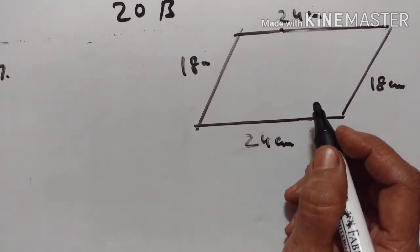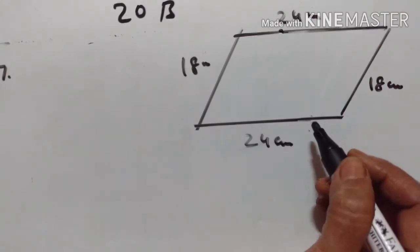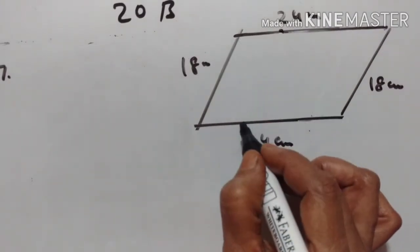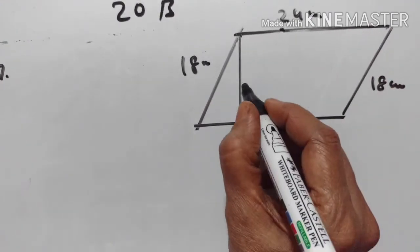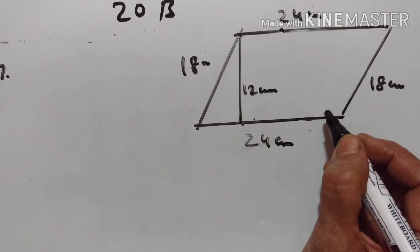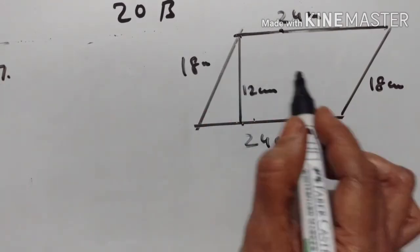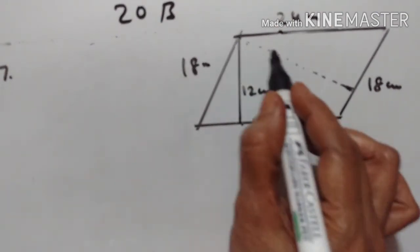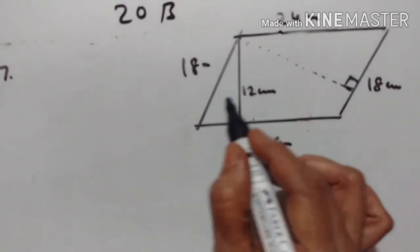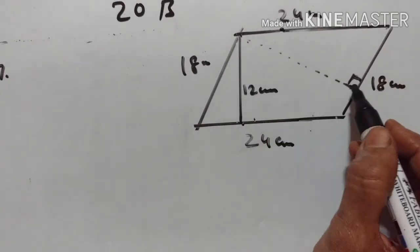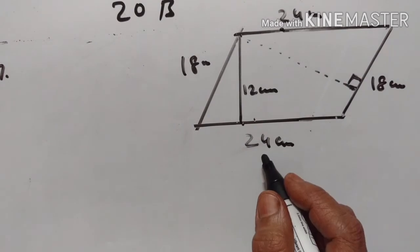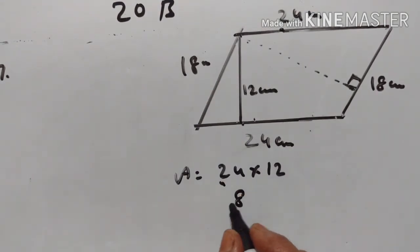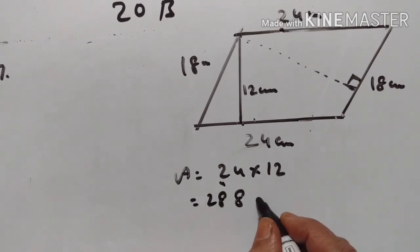17th problem. Two adjacent sides of a parallelogram are 24 cm and 18 cm. If the distance between the longer sides is 12 cm, find the distance between the shorter sides. The area of the parallelogram is equal to base into height, so area equals 24 into 12, which is 288 square cm.